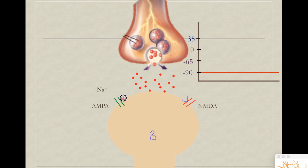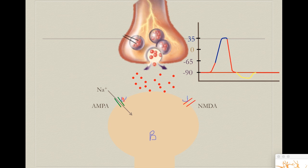When glutamate binds to the AMPA receptor, it changes the structural conformation of the receptor, allowing sodium to get into the cell. When we check the electric potential of this neuron, we can see that as positively charged ions enter, the neuron starts depolarizing. When this neuron depolarizes to about minus 56 mV, it generates the famous action potential, which we will review in a later class.